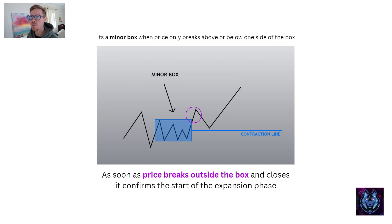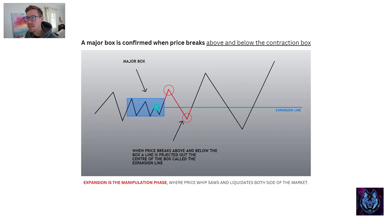We have two different kinds of boxes. A minor box is formed when price only breaks above or only below the contraction box — to one side only. As you can see, price breaks up and it's only broken to one side, so it stays a contraction line, which is a minor box. A major box is confirmed when price breaks both above and below the box — we call this an expansion line. Expansion is the manipulation phase where price whipsaws in a range-like fashion to liquidate both sides of the market. When you know this, trading the high and low of the range becomes an excellent strategy.